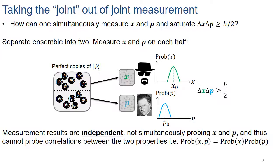Similarly for momentum. In addition to having a center, these probability distributions will have a width, and that width is what should go into the Heisenberg uncertainty principle. Assuming our measurement devices are perfect and we have the correct state — a Gaussian wave packet — then we can saturate the Heisenberg bound. It might seem like we performed a good joint measurement because we simultaneously measured position and momentum and saturated the bound. But the issue is that our measurements were independent.